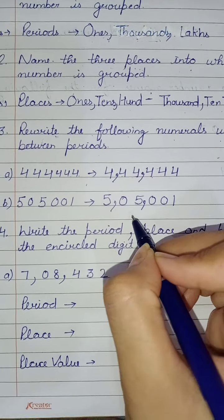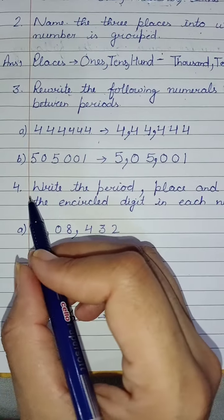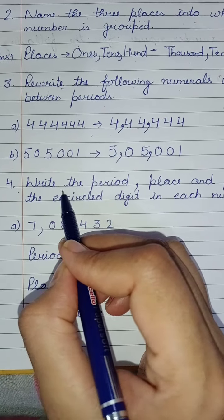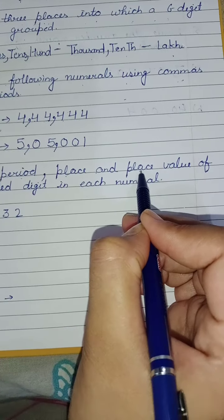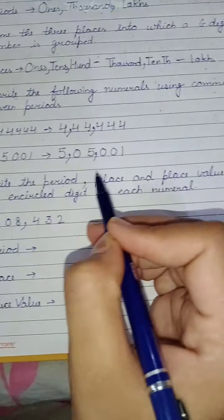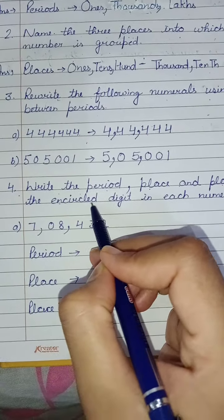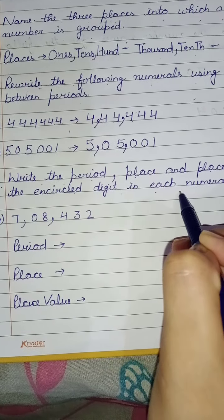The ones group here, thousands group here, and lakhs group here. Now you will insert the commas. Next question is fourth question: Write the period, place, and place value of the encircled digit in each numeral.